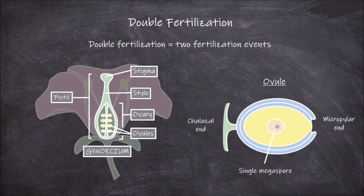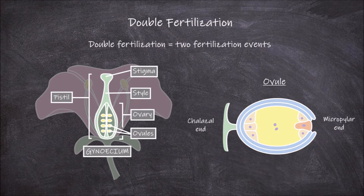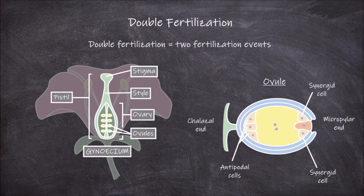The remaining megaspore undergoes three mitotic divisions to create eight nuclei. Three of these nuclei form the antipodal cells and move to the chalazal end of the embryo sac. Two nuclei form the synergid cells and move to the micropylar end of the embryo sac. Another nucleus also moves to the micropylar end and forms the egg cell. The remaining two nuclei move to the centre of the embryo sac.